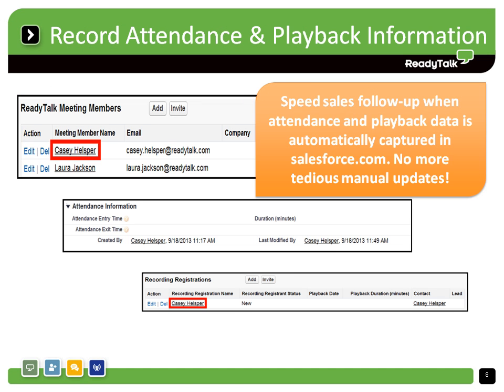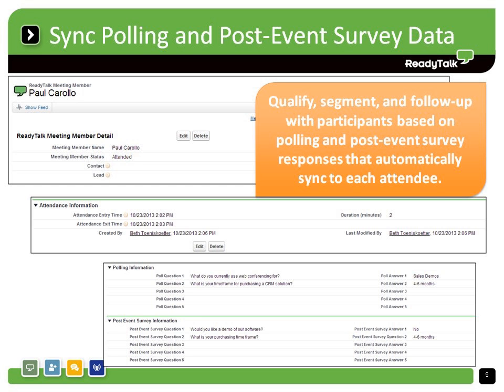After the live event has ended or a recording has been viewed, ReadyTalk for Salesforce will automatically record attendance and playback data in Salesforce, including who attended and for how long, immediately after your event. In addition, if you use polling or post-event surveys to gather additional information about your audience, the specific questions and answers are automatically matched to each participant's record, allowing you to qualify, segment, and follow-up with attendees accurately and efficiently.